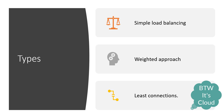The last one is the least connection mechanism. Nginx will check how many connections exist on the different servers and will send the request to the server having the least number of connections. Let's learn all these things in detail.